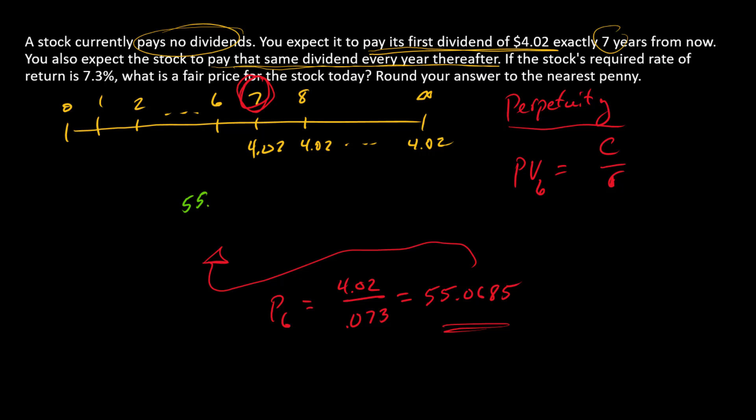We can put $55.0685 right here at time six and get rid of all of those dividends, because we've already substituted in the present value at time six for all those future dividends.